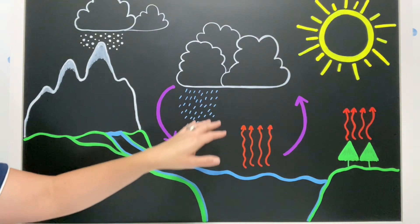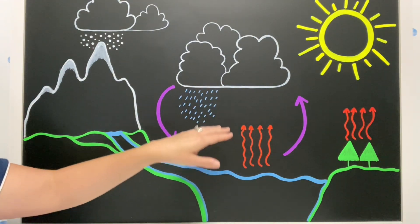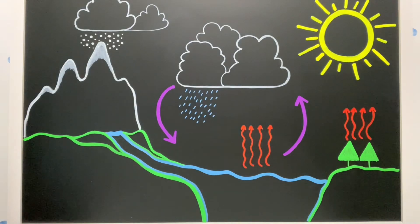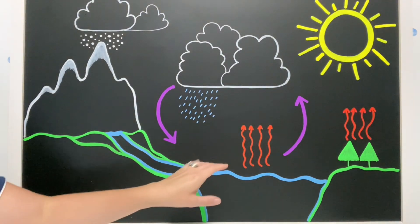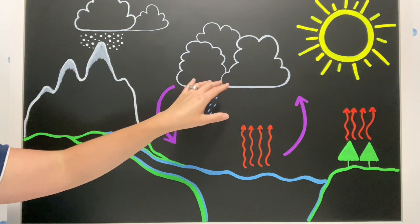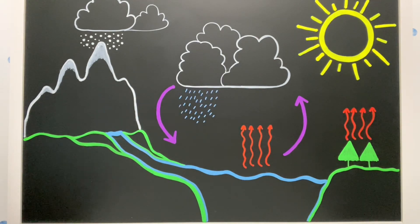And when that gas goes up into the sky, as it gets further away from the ground, it actually gets colder. So when that gas gets colder, what's going to happen? It's going to turn back into a liquid. But it's going to do that as a cloud. It's going to condense into a cloud.